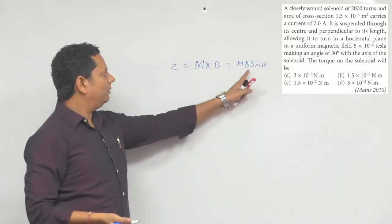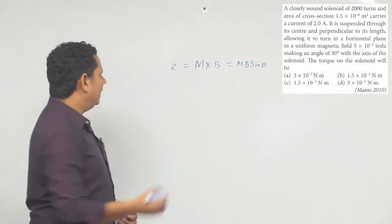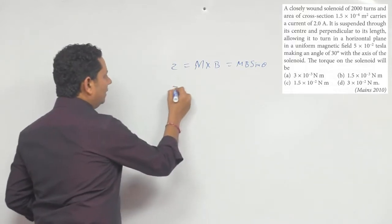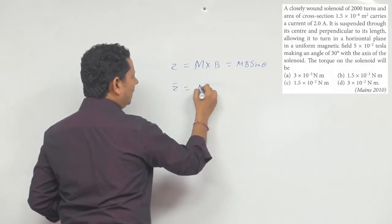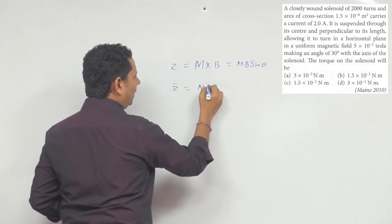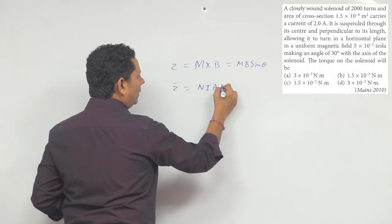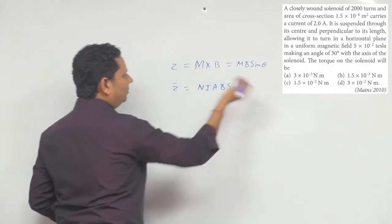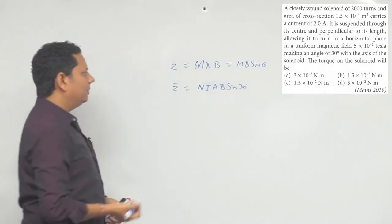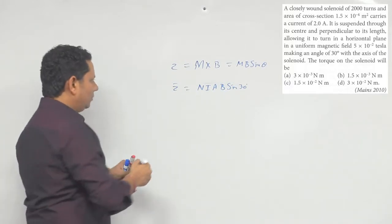Here θ is given as 30 degrees, the value of B is known, and we need to find the value of m. So this torque can also be written by replacing m with NIA — in place of m we write NIA — multiplied by b sin 30 degrees. Substituting the data values will give us the final answer.